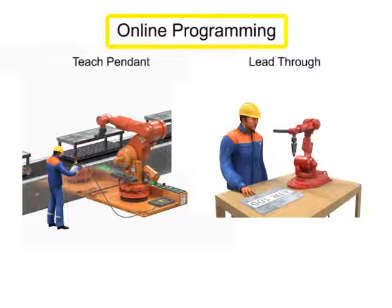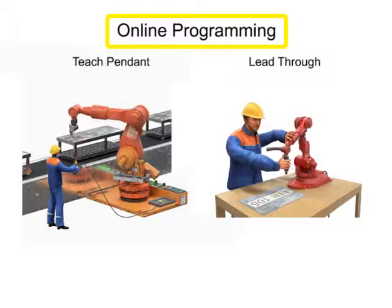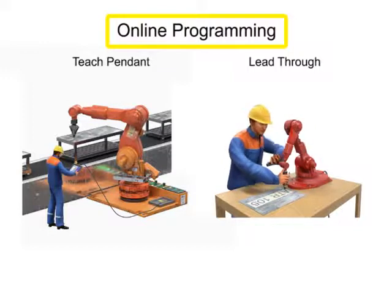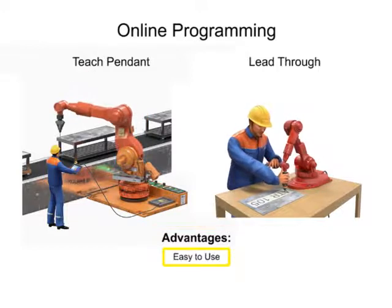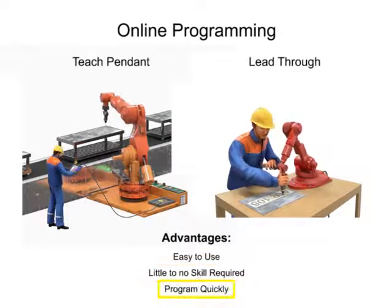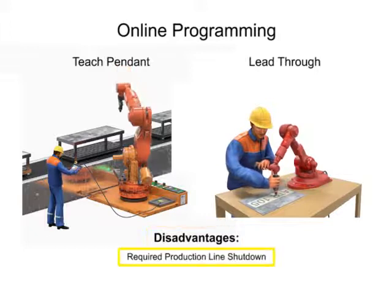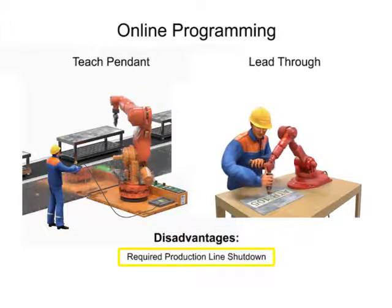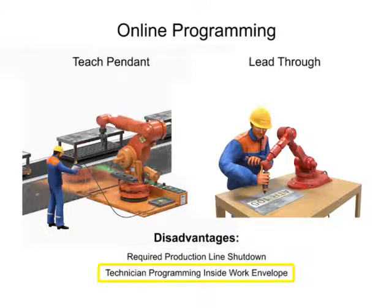Online programs can typically be edited for speed, point error correction, and small modifications once the initial programming is complete. Advantages of online programming include ease of use, little or no programming skills required, and the speed at which a program can be created. The disadvantages of online programming are the requirement to shut down the production line while programming is occurring, and that the technician typically has to be in the work envelope while the robot is operating, which exposes them to greater risk of injury.